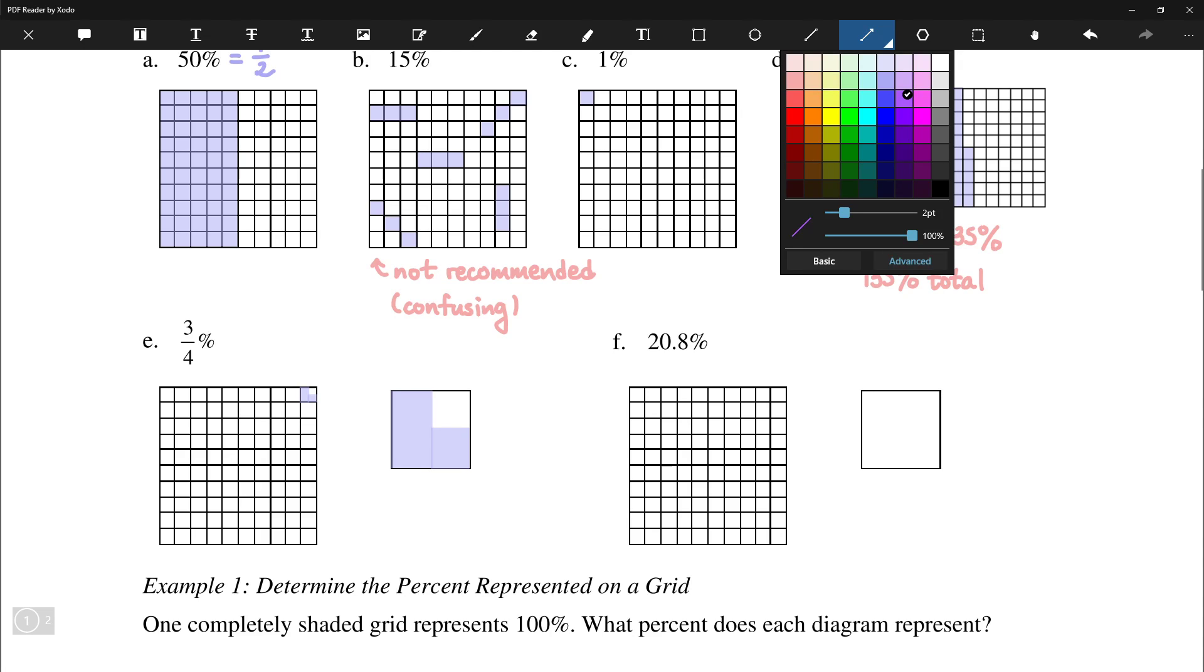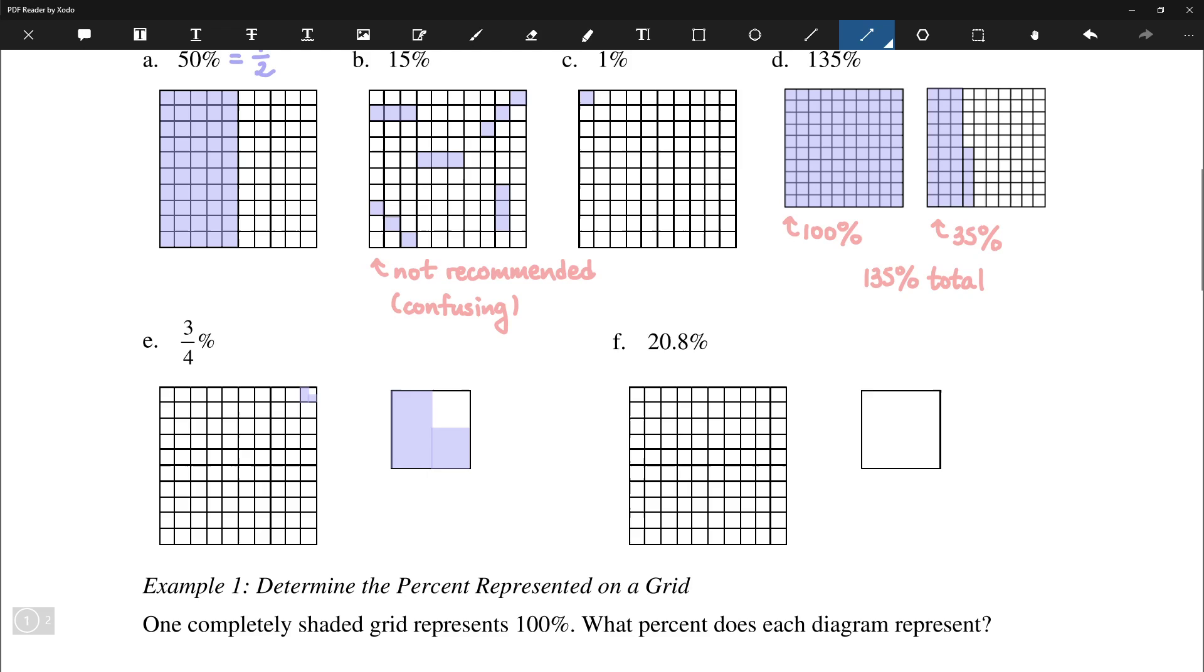When we are looking at questions of this type, it's generally a good idea to indicate what's happening. So let's go ahead and use the arrow here. And again, we have 3 quarters of one square, which of course is equal to 1%. So each square is 1%.